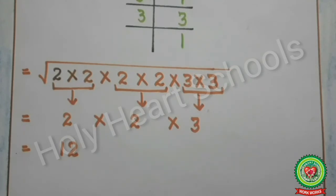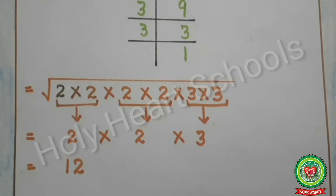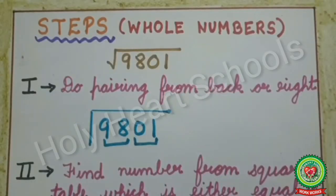Students, this is the square root by prime factorization method. But if we have a large number, this method becomes a little lengthy because we have to find so many factors. To reduce that complication, we have a new method: square root by long division method. We have discussed long division method for division of polynomials in algebra — today we will discuss how to find square root by long division method.